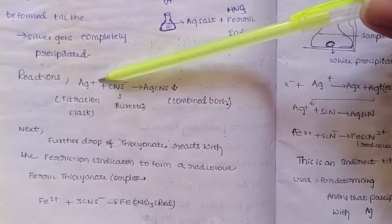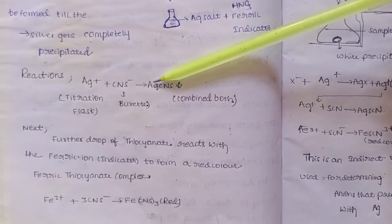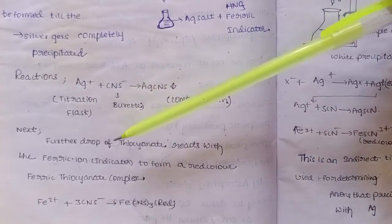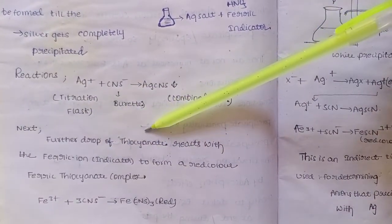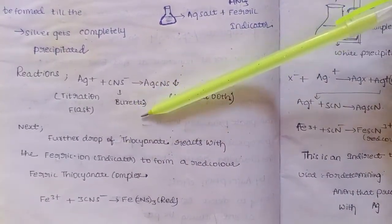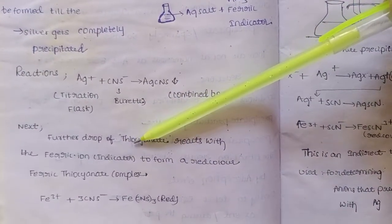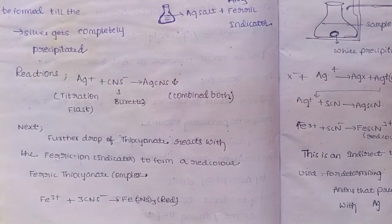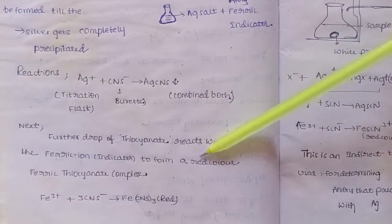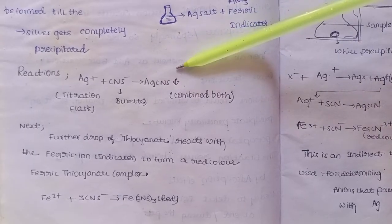The reaction is: Ag+ reacts with thiocyanate (SCN-) to form silver thiocyanate (AgSCN) precipitate. This continues until all silver is precipitated. Then, a further drop of thiocyanate reacts with the ferric ion (Fe3+) — which is the indicator — to form a red-colored ferric thiocyanate complex, indicating the end point.